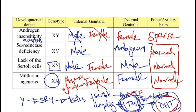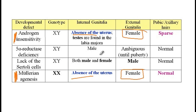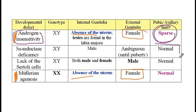Now let's summarize all these findings in the table. The first and last rows are highlighted in blue because androgen insensitivity and Müllerian agenesis both present with absence of the uterus and female external genitalia characteristics. The only way to distinguish them is to look at pubic and axillary hair: in androgen insensitivity, since there is a problem with androgen receptors, pubic and axillary hairs are sparse, versus every other condition, which has normal pubic and axillary hairs.